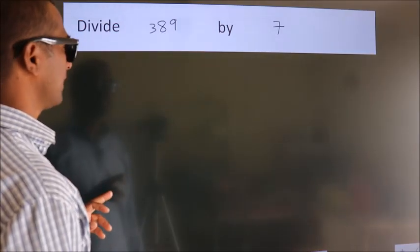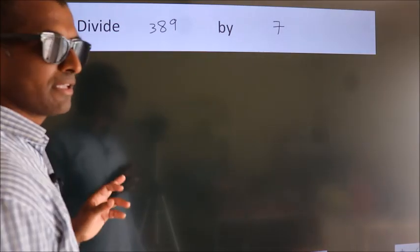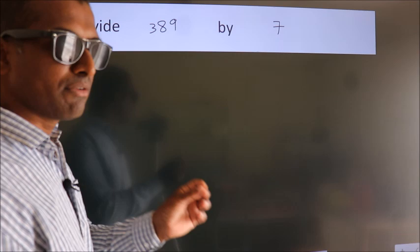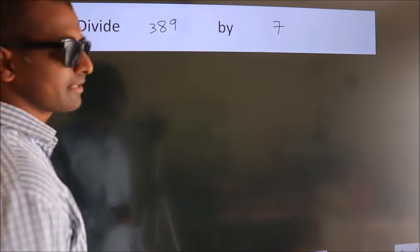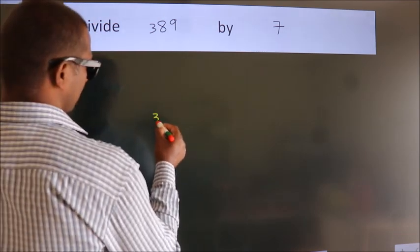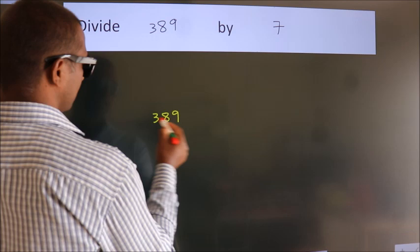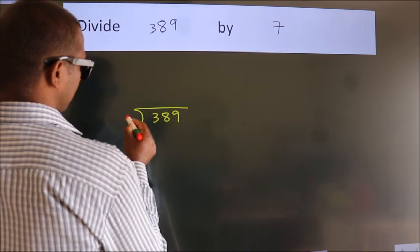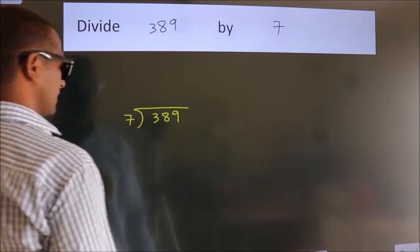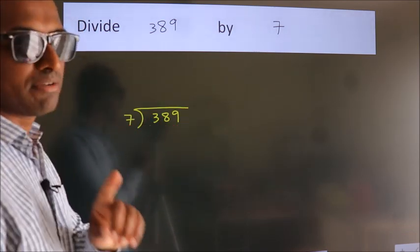Divide 389 by 7. To do this division, we should frame it in this way. 389 here, 7 here. This is your step 1.